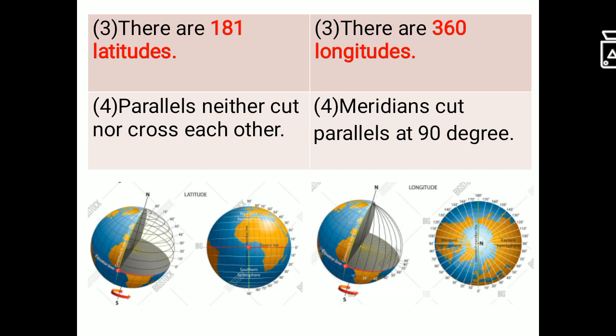Meridians cut parallels at 90 degree. Yes, longitudes and latitudes cut each other at a point which forms 90 degree angle.